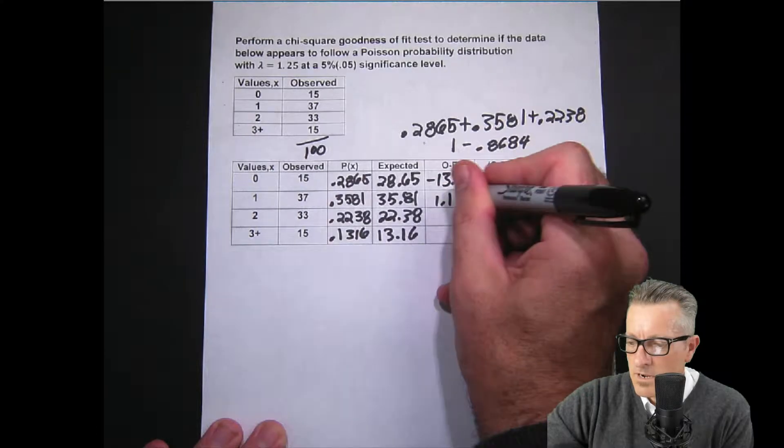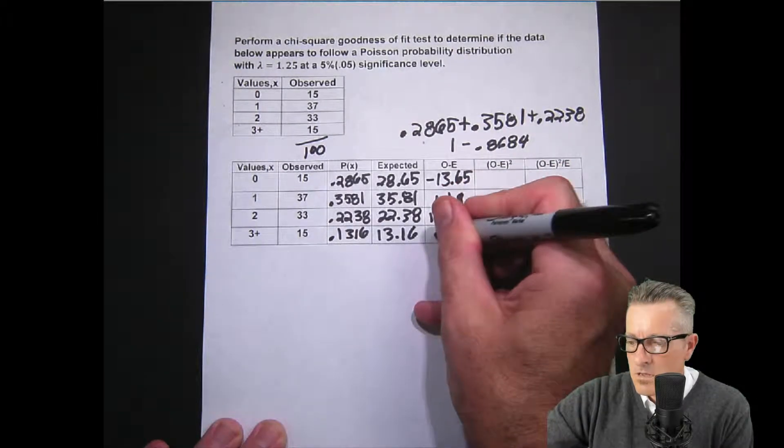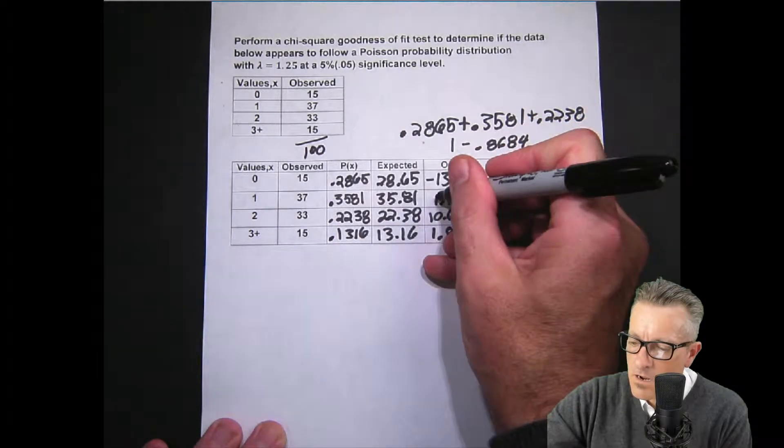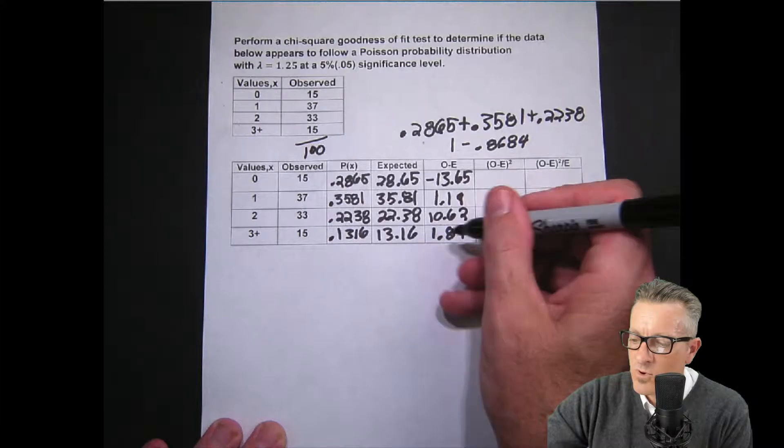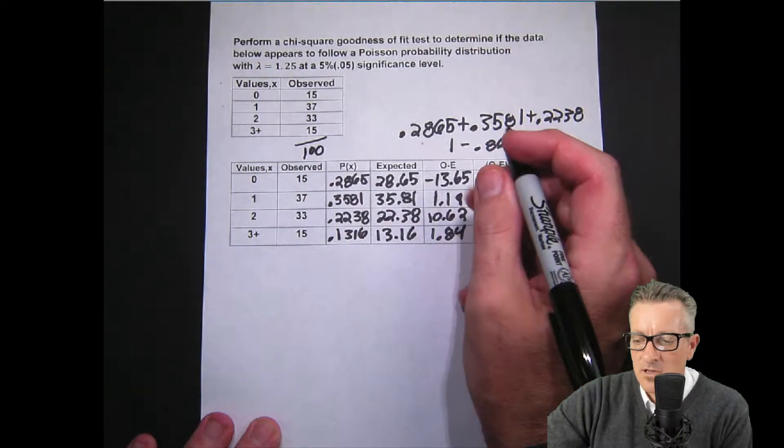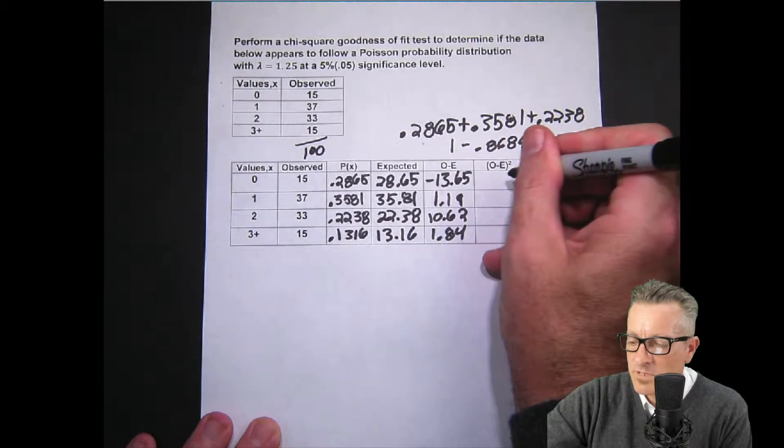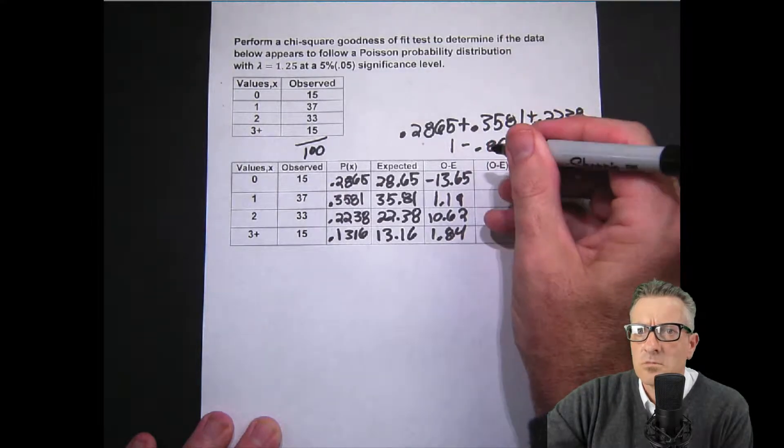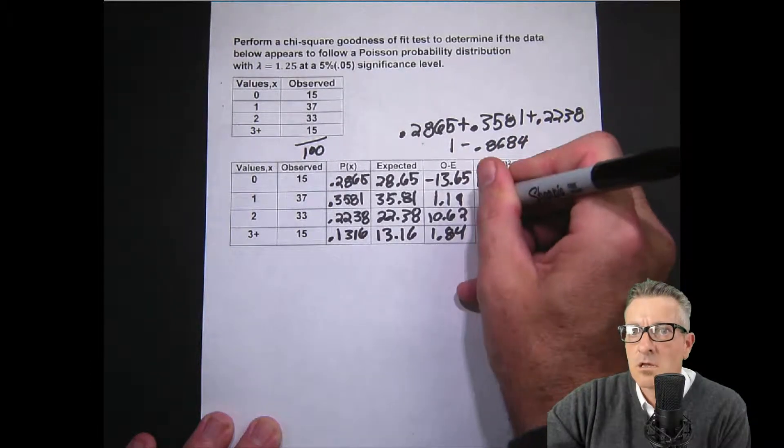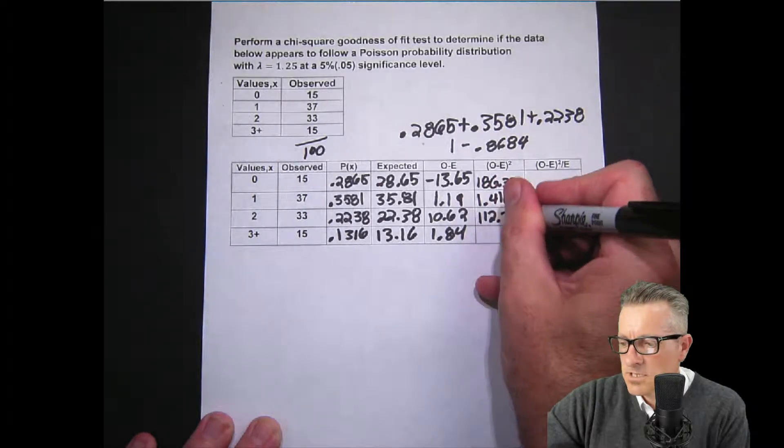Then we subtract observed from expected. We get negative 13.65, 1.19, 10.62, and 1.84. Then we just square that—remember with negatives make sure you put parentheses around it because otherwise the calculator doesn't always do it right. Our answer when we square: 186.3225, 1.4161, 112.784, and 3.385.